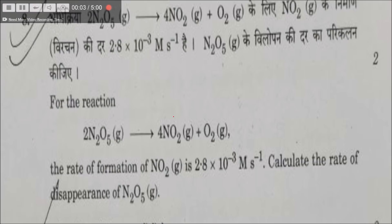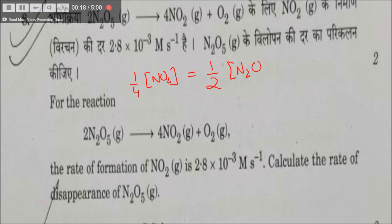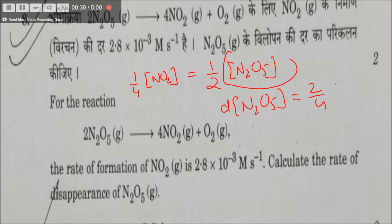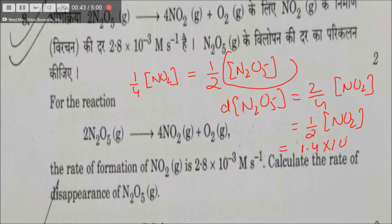This question is about the rate of formation of NO₂. We know that (1/4) × rate of formation of NO₂ equals (1/2) × rate of disappearance of N₂O₅. So the rate of disappearance of N₂O₅ would be (2/4) × rate of appearance of NO₂, or half of it — that would be 1.4 × 10⁻³ mol per liter per second.